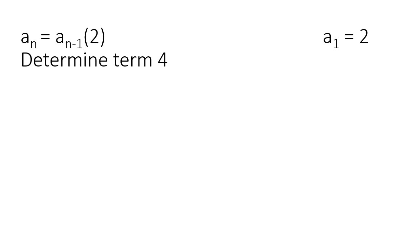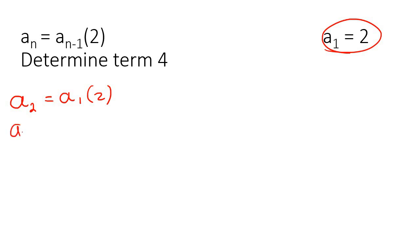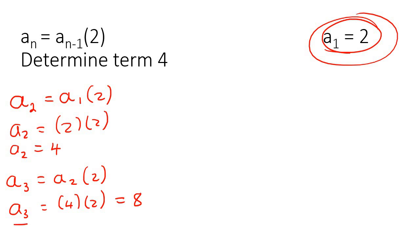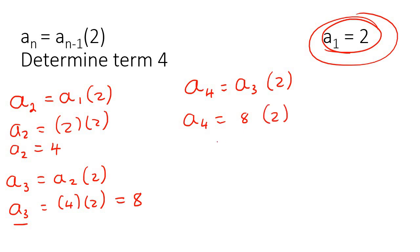Here they give us the recursive formula and they want us to find term 4, given term 1. You have to go one by one — you can't jump straight to term 4. So term 2 is the same as term 1 multiplied by 2. Term 1 is equal to 2, so term 2 equals 4. Then term 3 is the same as term 2 multiplied by 2, which is 4 times 2, giving us 8. Finally, term 4 is term 3 multiplied by 2, which is 8 times 2, giving us 16.